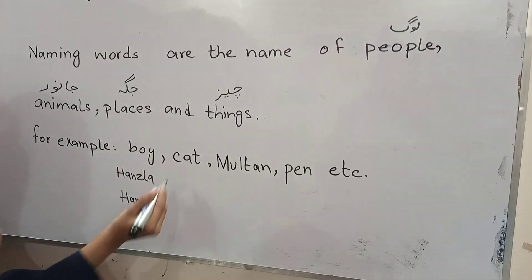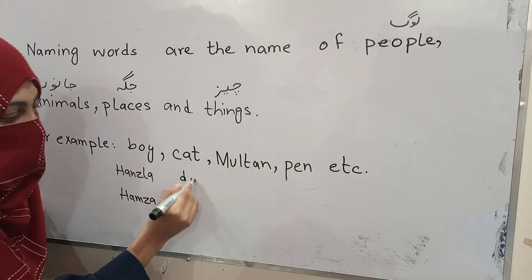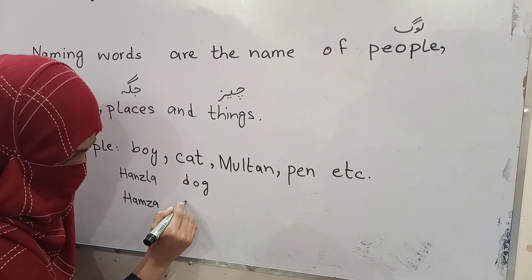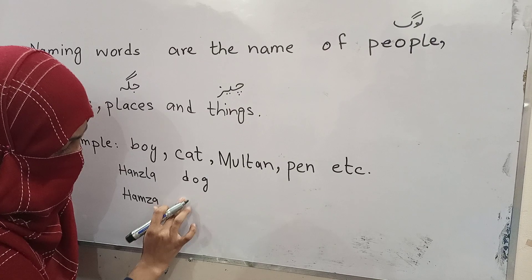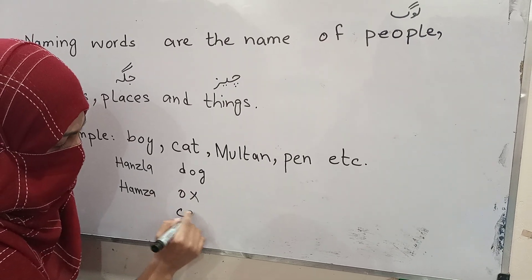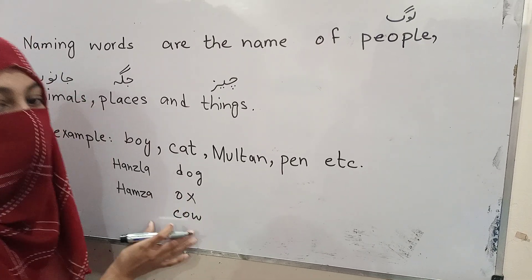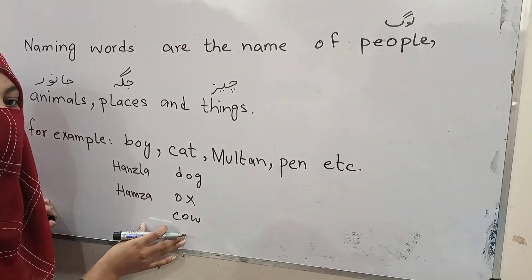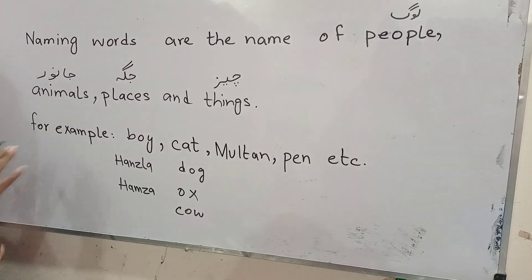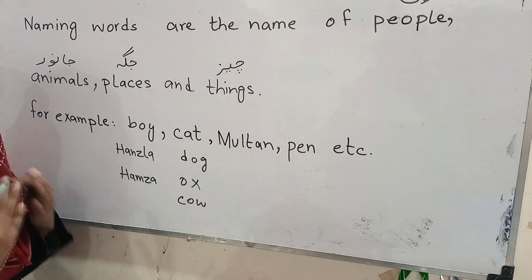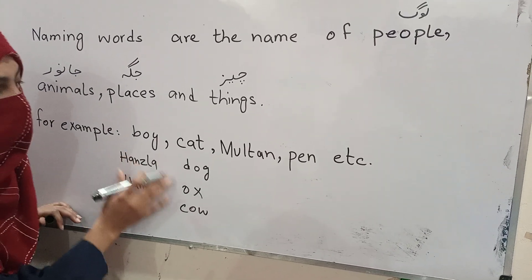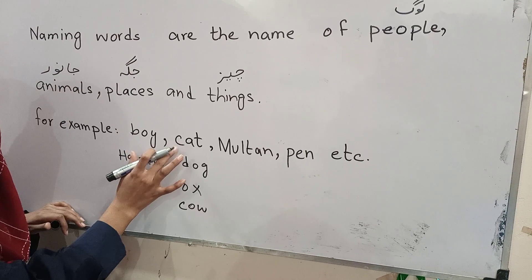Animals: cat, dog, ox, cow — yeh sab animals ke naam hain. Koi bhi animal jo hai, sab ke liye ek animal use nahi hota hai.